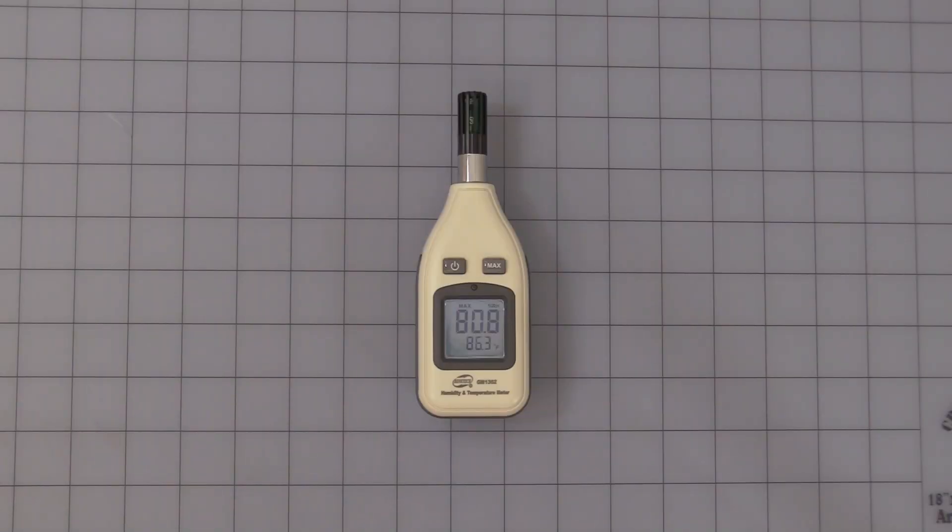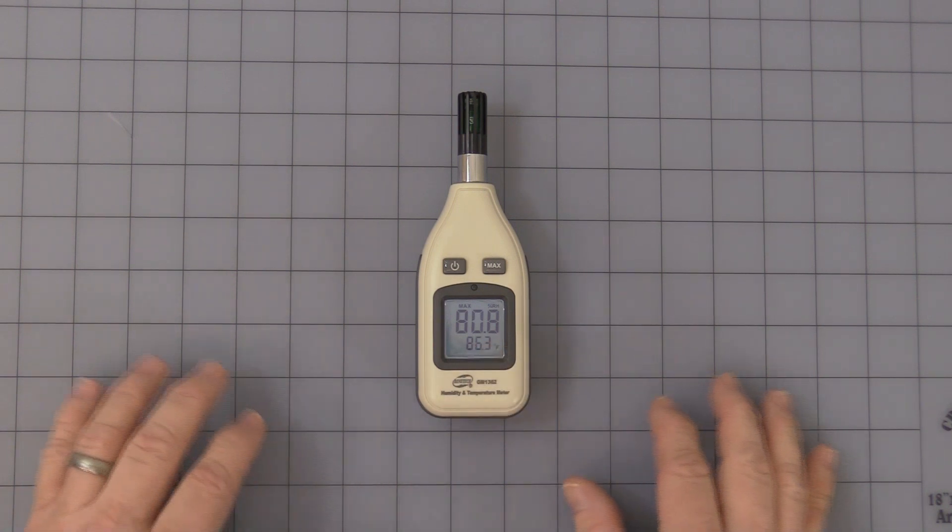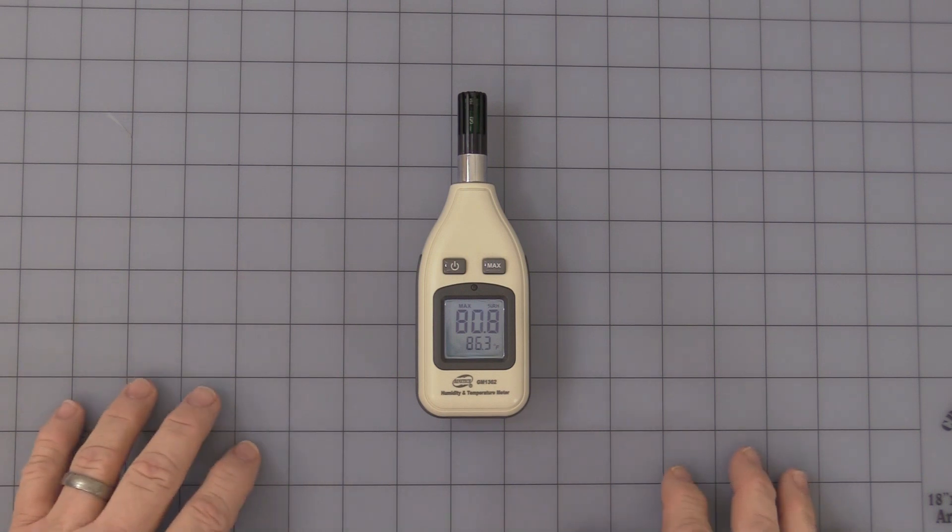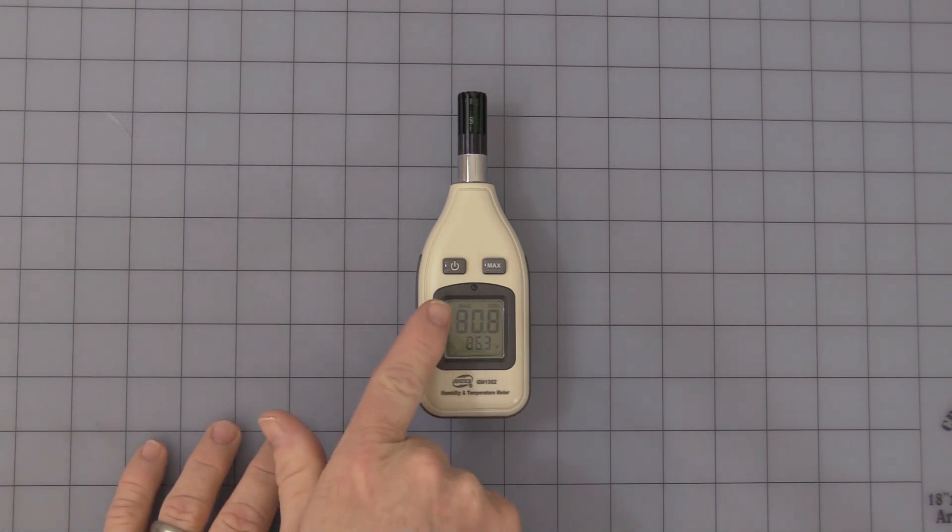Okay, I've just come back inside, and as you can see, after a few minutes outside on a nice spring summer day in Florida, it is 86.3 degrees at 80.8 percent humidity. And that's the highest temperature it read, so it will stay there as long as the max button is on.